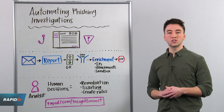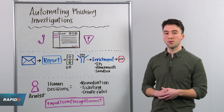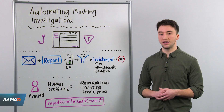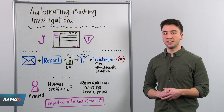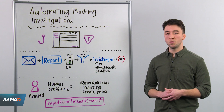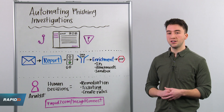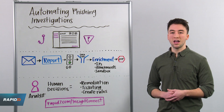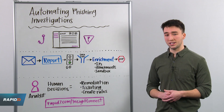When the source solution receives the data, you can begin to parse out different indicators that may be of interest in the email. With InsightConnect, we have utility plugins that allow you to automatically parse out header details, IPs, URLs, as well as attachments.